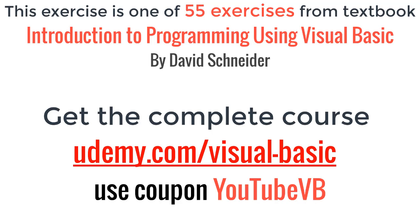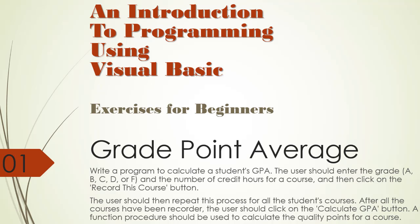Hello and welcome to an introduction to programming using Visual Basic exercises for beginners. In this exercise we are going to create a grade point average application. We are to write a program to calculate a student's GPA. The user should enter the grade A, B, C, D, or F and the number of credit hours for a course, and then click on the record this course button.